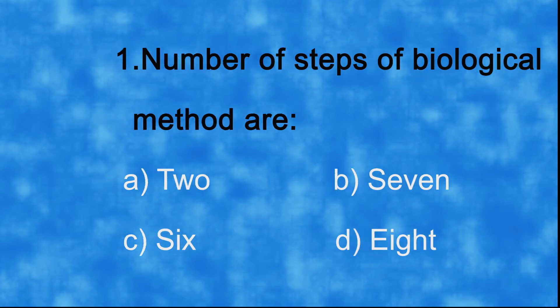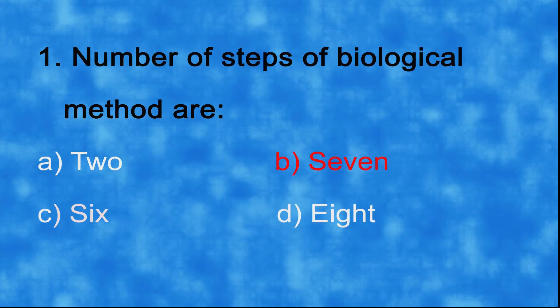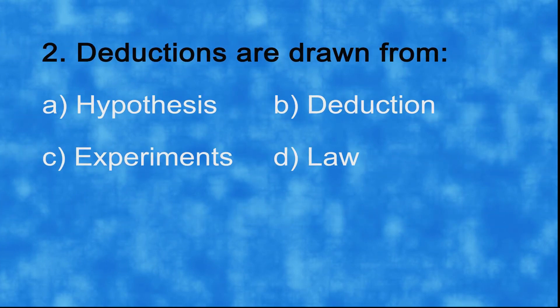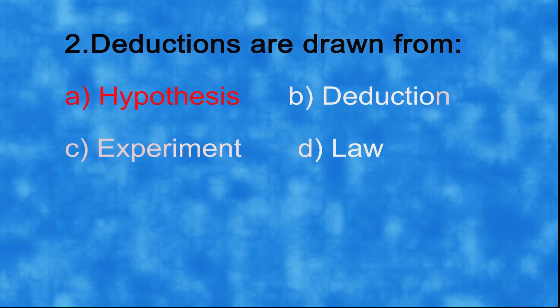And the correct answer is b) 7. Number two: deductions are drawn from a) hypothesis, b) deduction, c) experiments, d) law. And the correct answer is a) hypothesis. Number three: